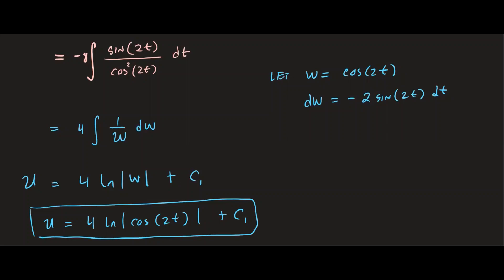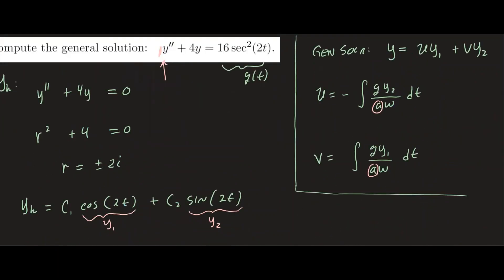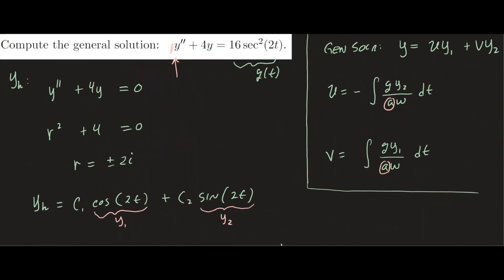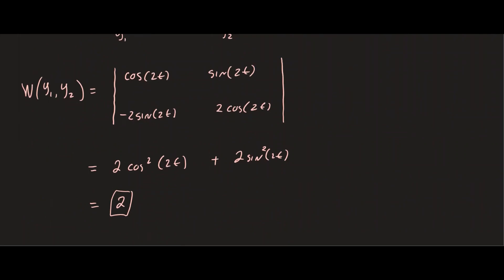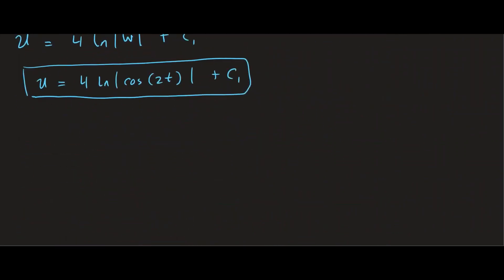Now the only piece we have left to finish computing is v. And we know v is given by the integral g y1 over a times w dt. So y1 is cosine 2t. So let's plug those in, let's set up that integral.